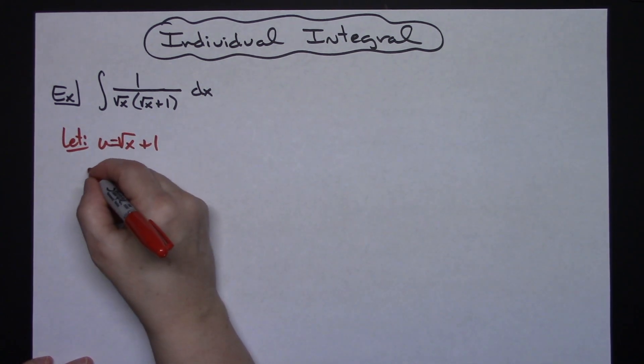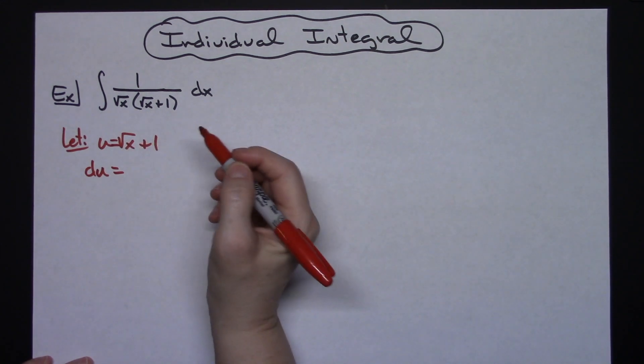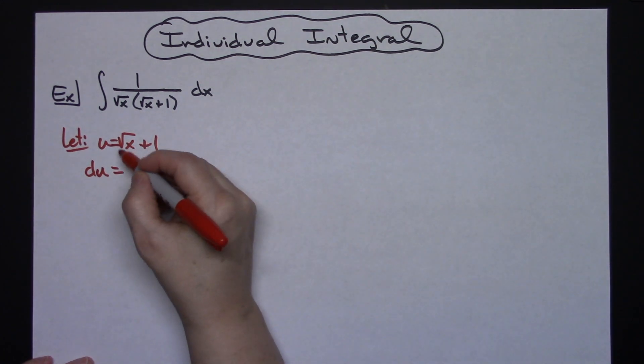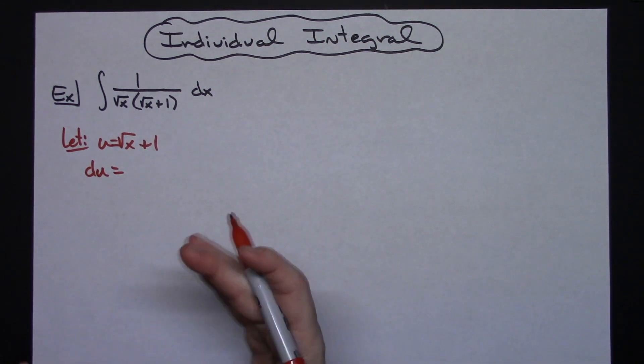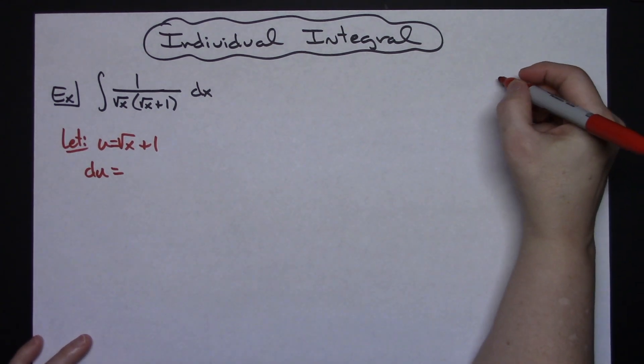Now I'm going to take the derivative of both sides. I'll have a du here. Obviously I'm going to take the derivative of 1, it's going to go away. That derivative of square root of x, if you're a beginning Calc student you may not be able to do that in your head. Okay, so let's do it over here.